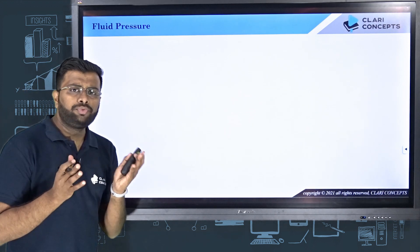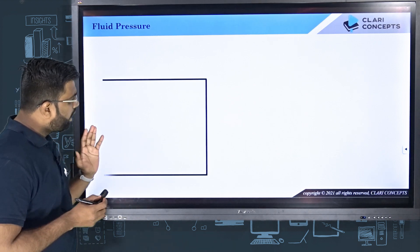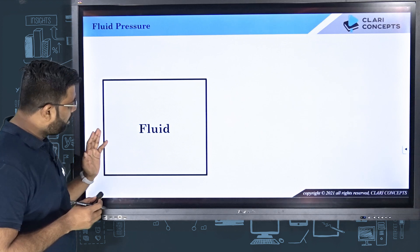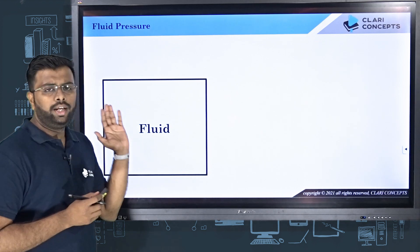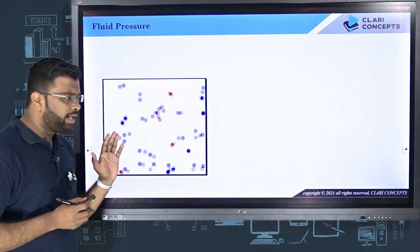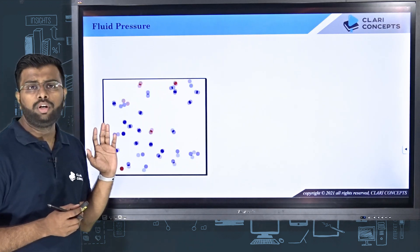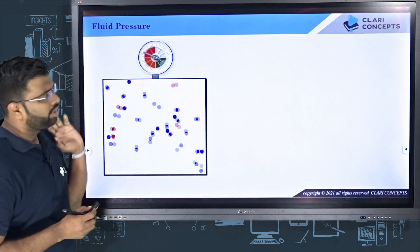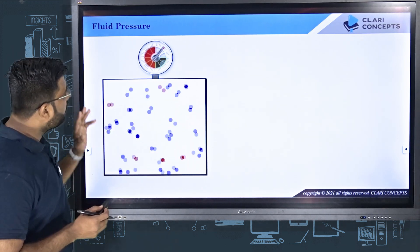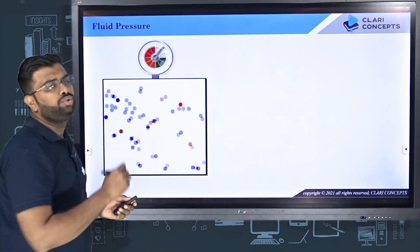So basically, what is fluid pressure? Let's say I have a container with a fluid filled inside. Fluid is inherently made up of several molecules which are moving randomly. Now when I ask you to measure the pressure of this fluid, you would simply mount a pressure gauge on one of the walls of the container and it shows some reading. My question is: what does this reading show you?